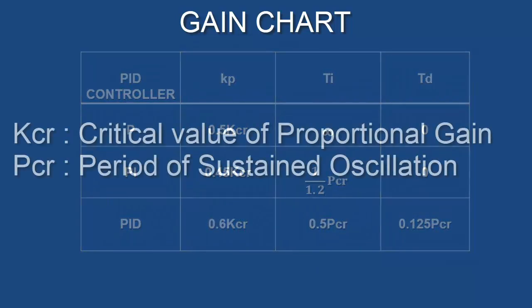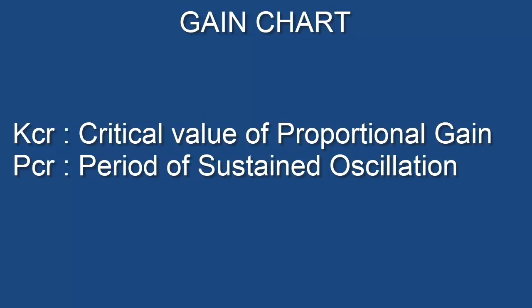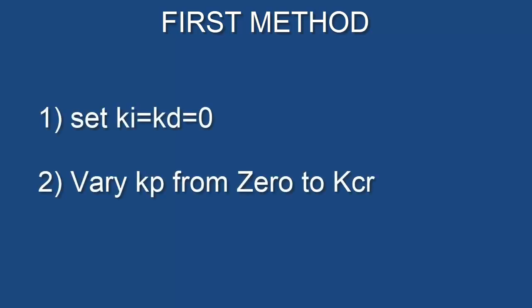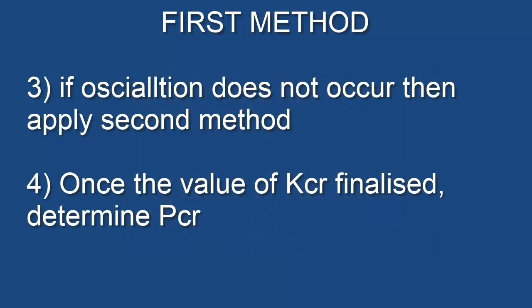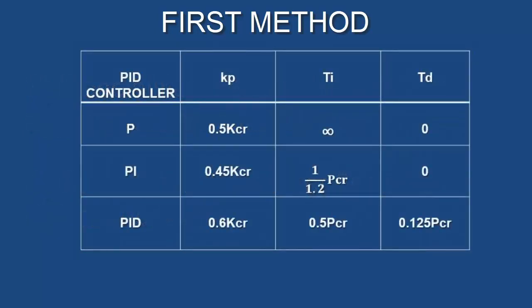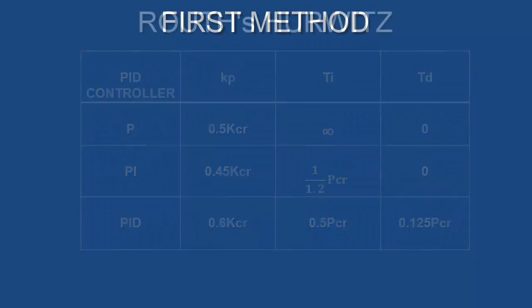KCR represents the critical value of proportional gain, and the sustained oscillation period corresponding to KCR is represented by PCR. The process begins by setting integral and derivative gains KI and KD equal to zero, then increasing the proportional gain KP from zero to some critical value KP = KCR at which oscillation is sustained. If this does not occur, another method must be applied. Once the value of KCR is obtained, evaluate the period of sustained oscillation PCR measured in seconds. According to the values of KCR and PCR, the PID controller parameters are calculated. One way to determine KCR and PCR is to manually adjust and spot the graph for every estimation. But practically, these parameter values are calculated using the Routh-Hurwitz array.